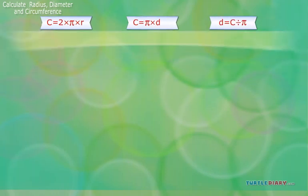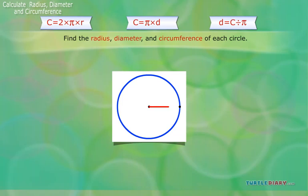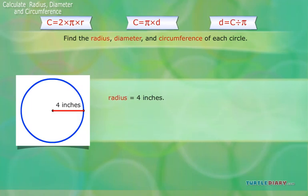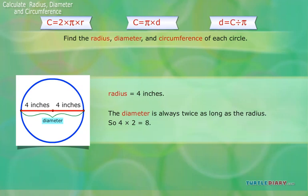Example: radius equals 4 inches. Find the radius, diameter, and circumference of the circle. We can tell from the picture that the radius equals 4 inches. Remember, the radius goes halfway across the circle. The diameter is always twice as long as the radius, so 4 times 2 equals 8. The diameter is 8 inches.